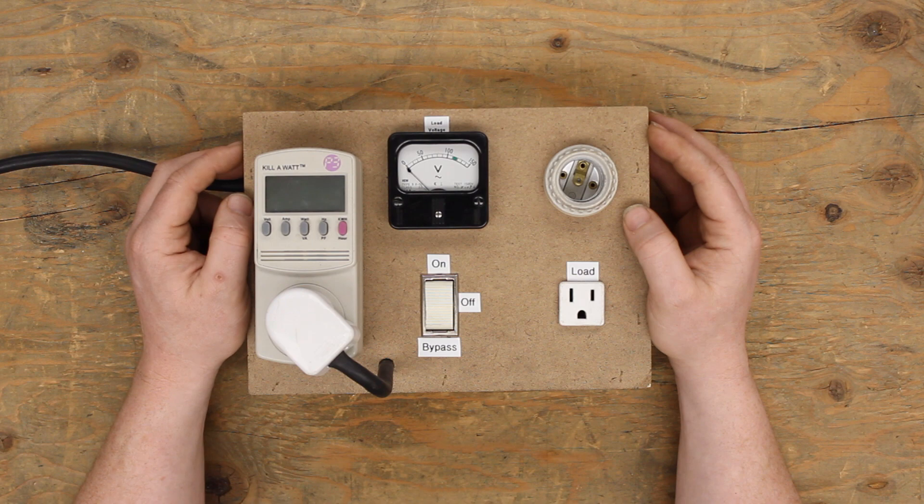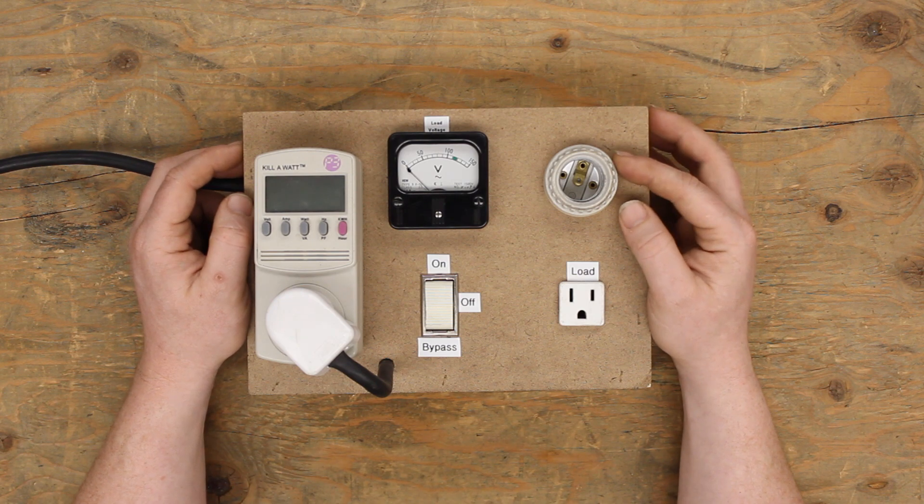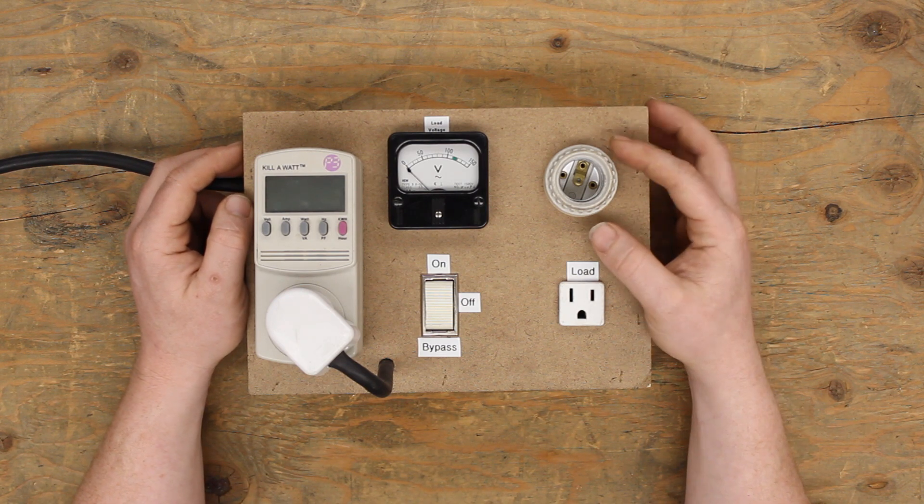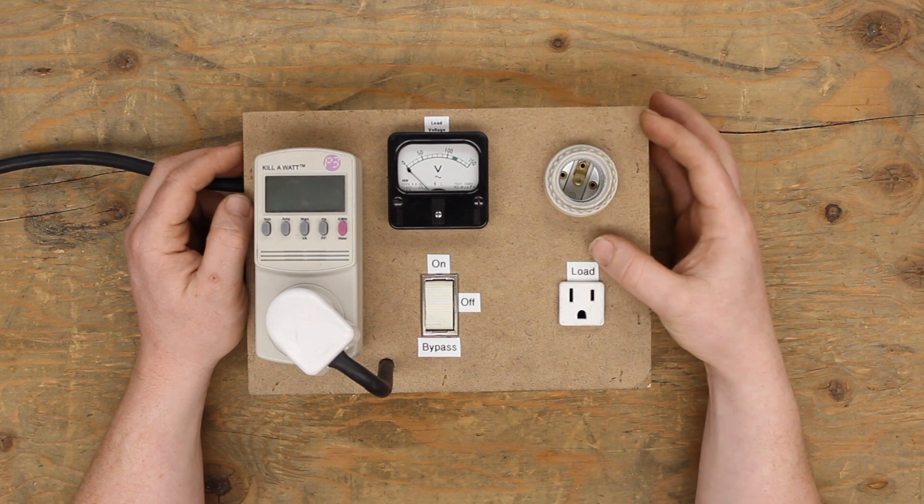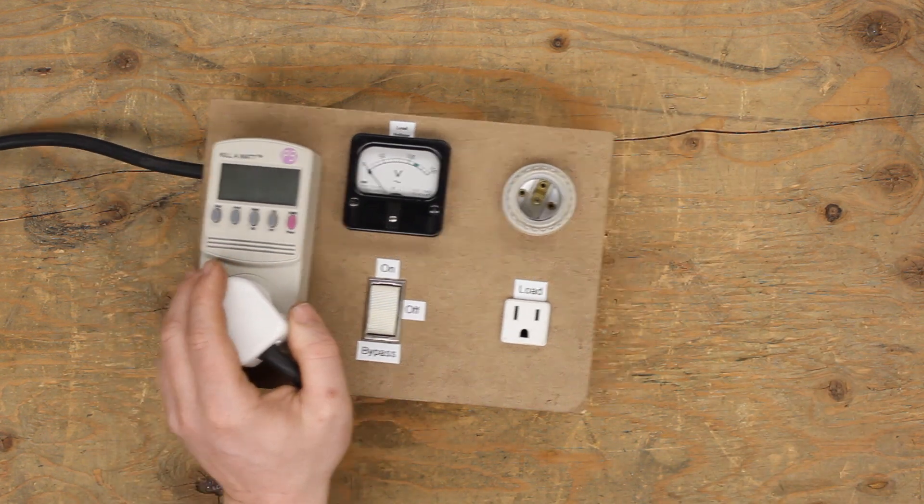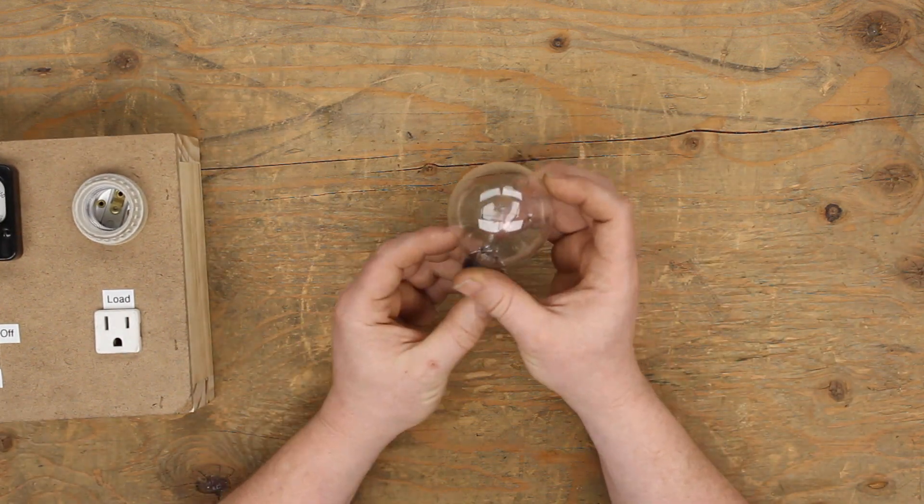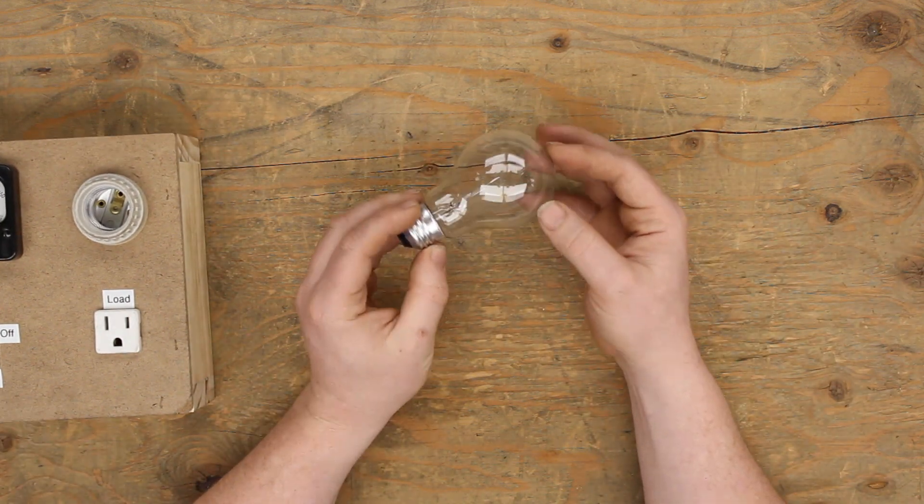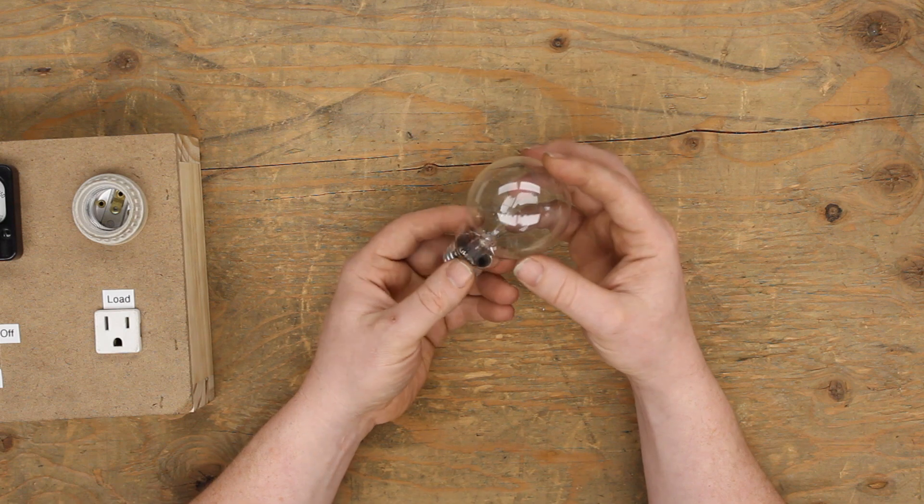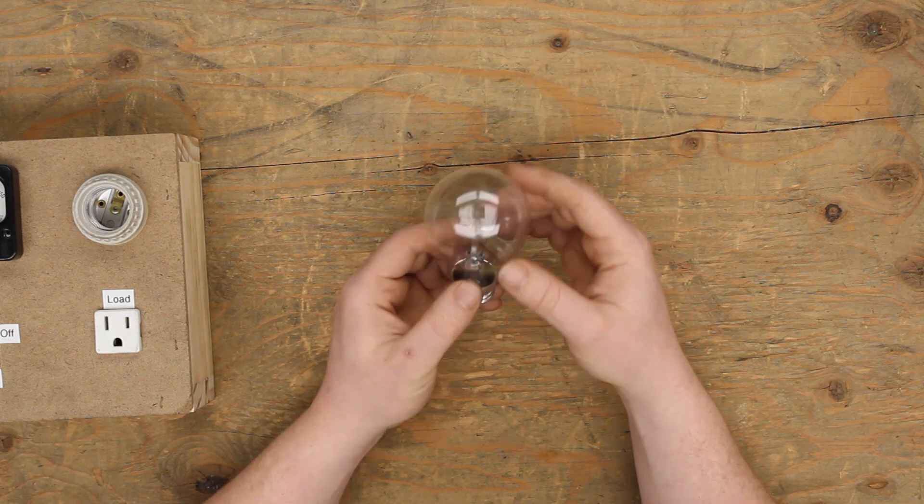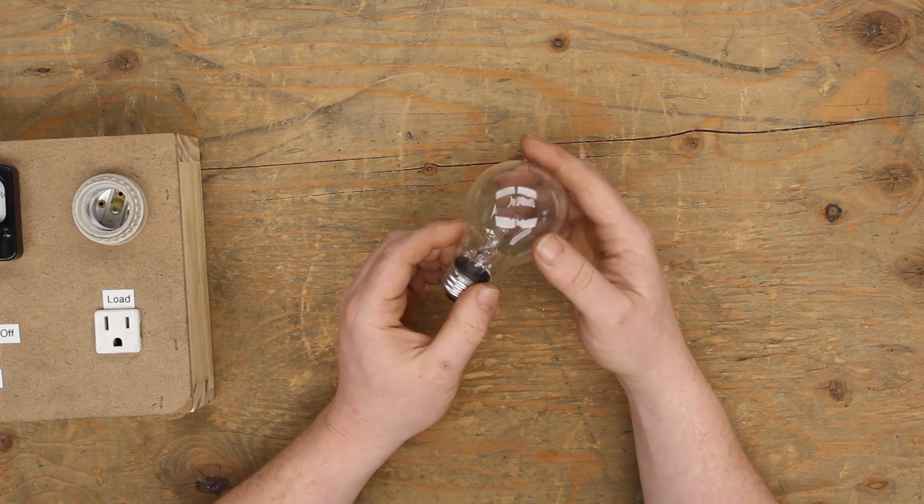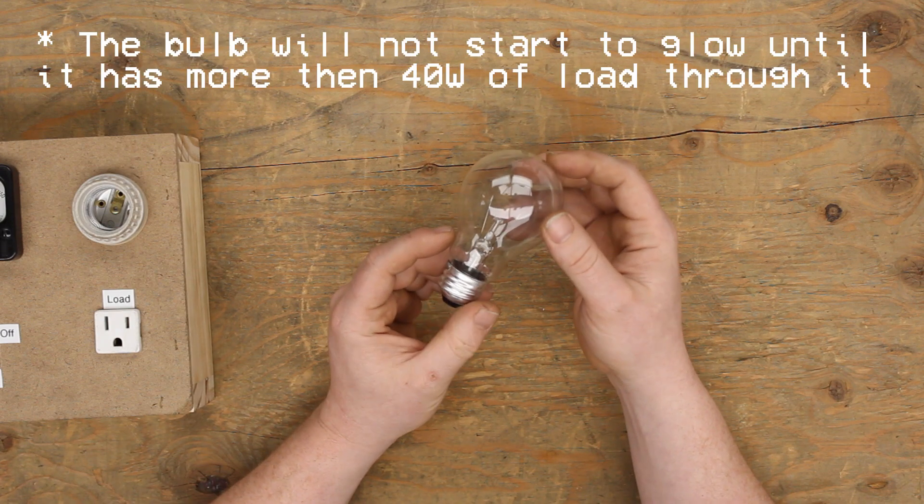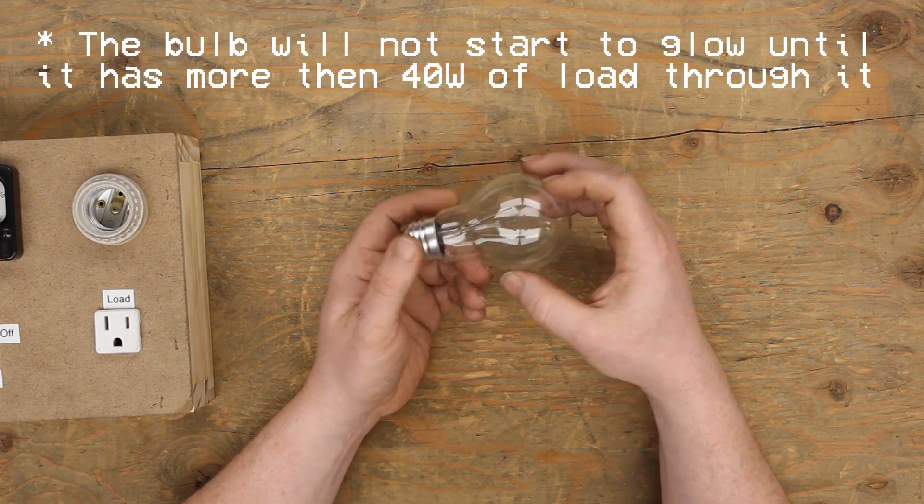The ultimate idea for a dim bulb tester, beyond reducing the output voltage to your load, is that it's also current limiting. That is the purpose of the dim bulb. An incandescent bulb is essentially a resistor. This one here is a 40 watt bulb, so this would be a resistor that's capable of offloading about 40 watts of load.